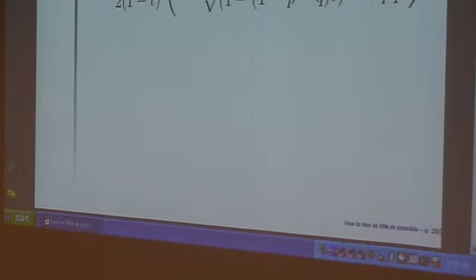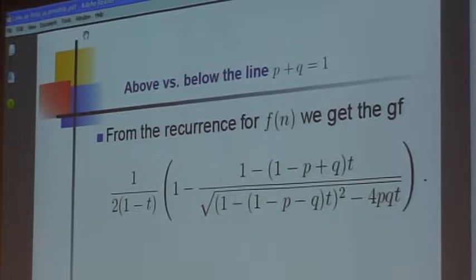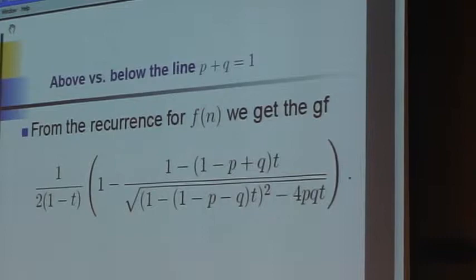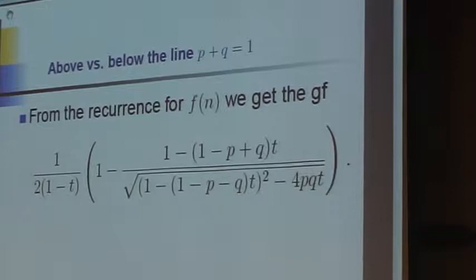I can't walk past the generating function without acknowledging that it's there. It's just constitutional, I can't do that. So here is the generating function of that f of n that we started with way back. And the big double sum, the probability that Alice wins has this generator.